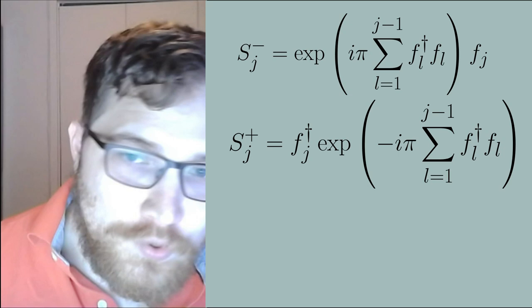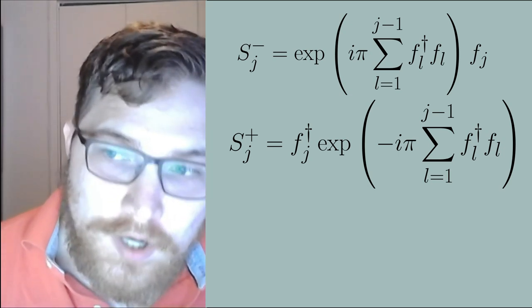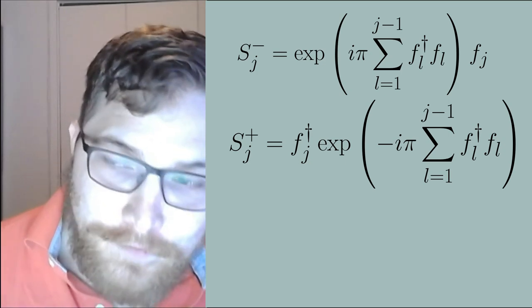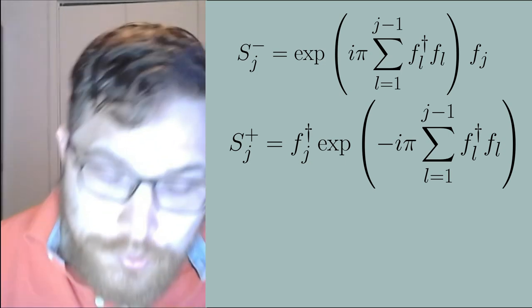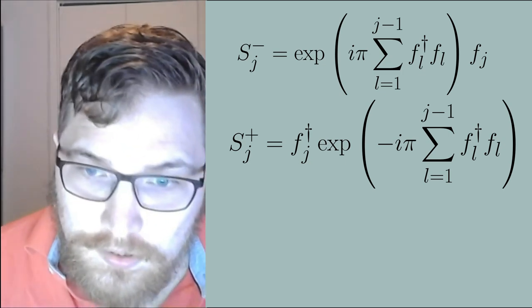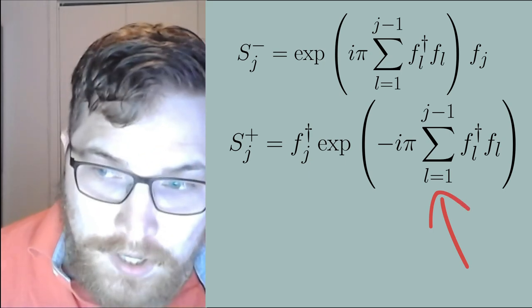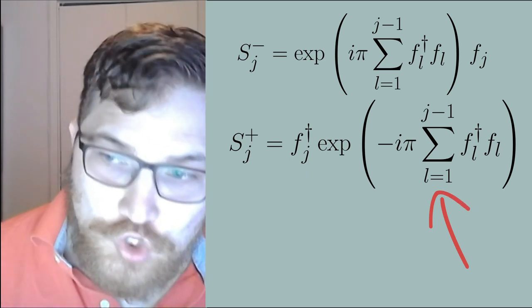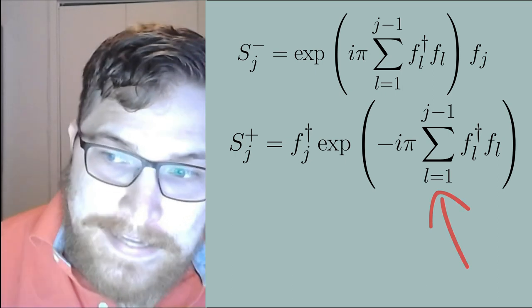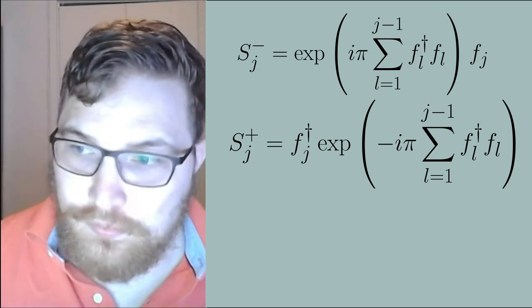So despite this difference Jordan and Wigner in 1928 showed that spin operators for the whole chain can be represented exactly in terms of fermionic operators by the following mapping. So some important things to note about this expression is that inside the exponential function we have the sum that runs for all fermionic sites from one to j minus one where j is the index of the spin operator that we are mapping onto fermions.